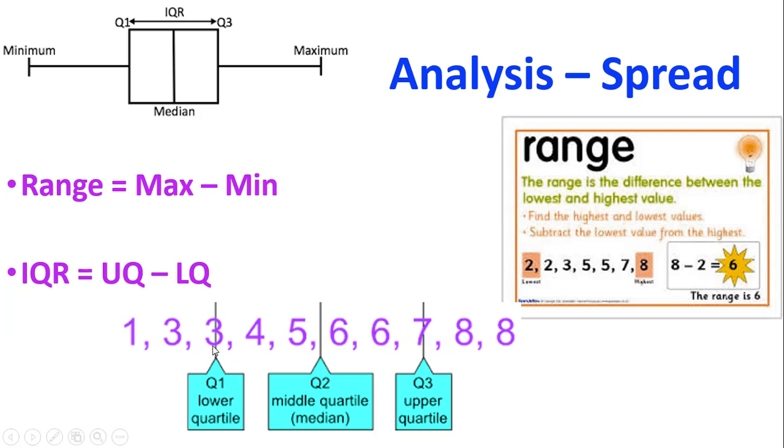Then go back to the median, and you're going to look at all the numbers that are bigger than that median. And from that set of numbers that are bigger than the median, you're going to find the middle, which is at seven. So that would be your upper quartile. So the interquartile range for this set of data would be seven take away three, which is four.